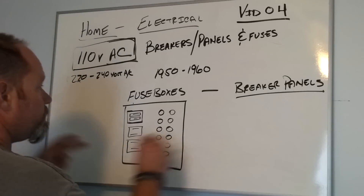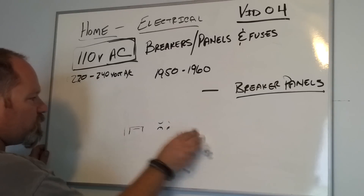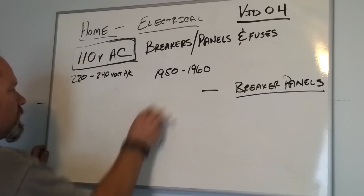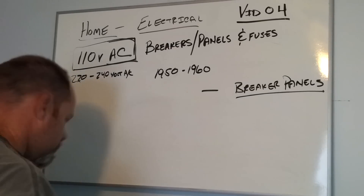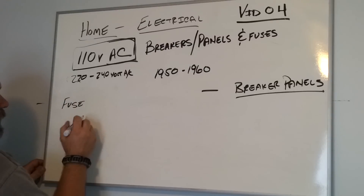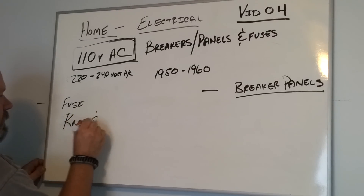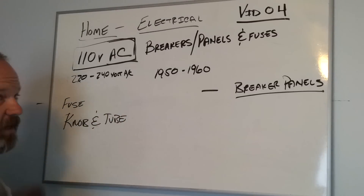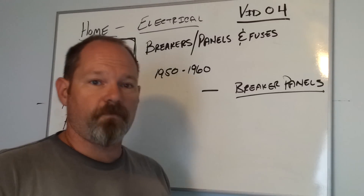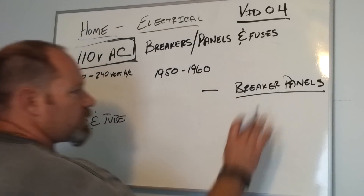Let's get rid of the fuse box — if anyone has a fuse box and wants to discuss it we can, but if you still have fuses you probably have knob-and-tube wiring as well. If you've got knob-and-tube, we can discuss it if needed. Let's move on to the breaker panel.